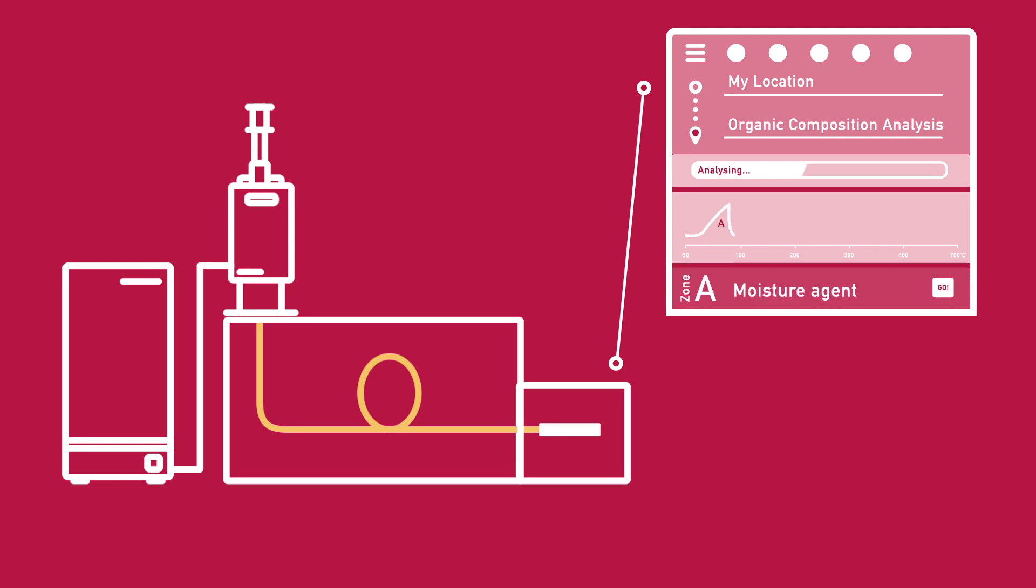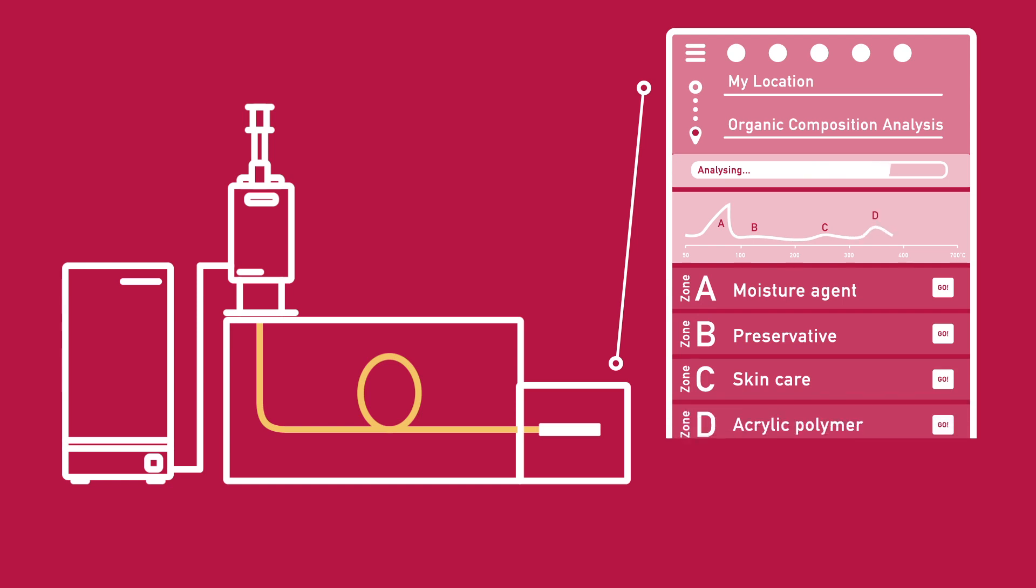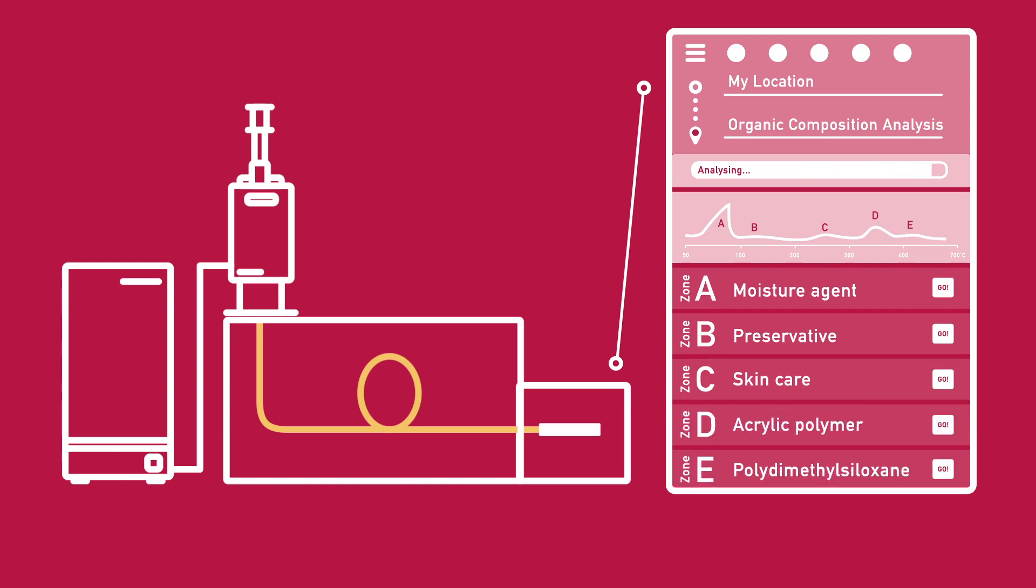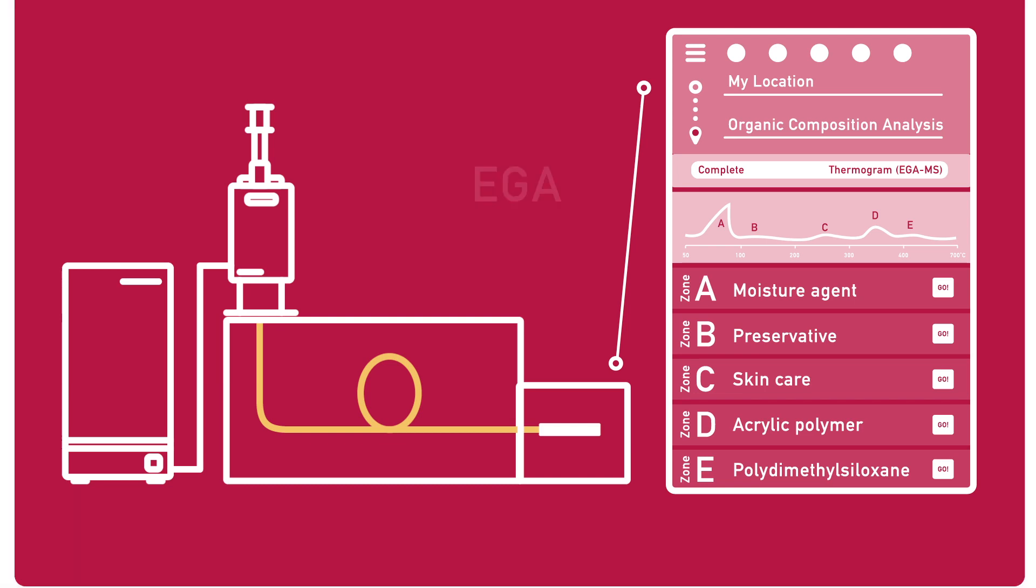Compounds evolve continuously from the sample as the temperature increases and are directly transferred to the detector. A plot of detector response versus furnace temperature is then obtained. You have just completed your first step on your journey to the land of answers.